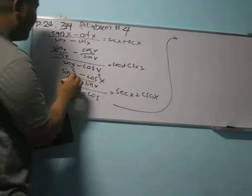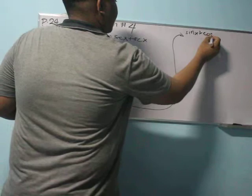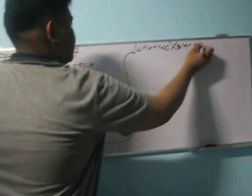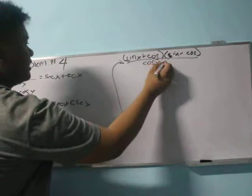So this becomes sin squared x minus cos squared x over cos x sin x, which can be factored as (sin x + cos x) times (sin x - cos x) all over cos x sin x.